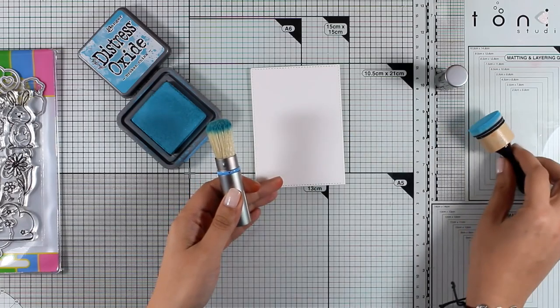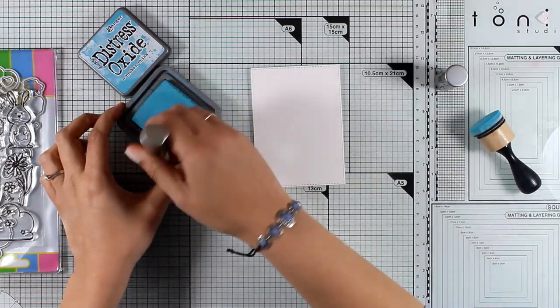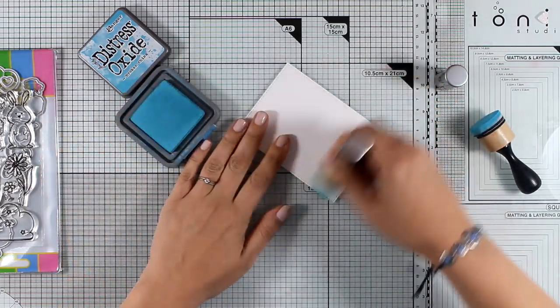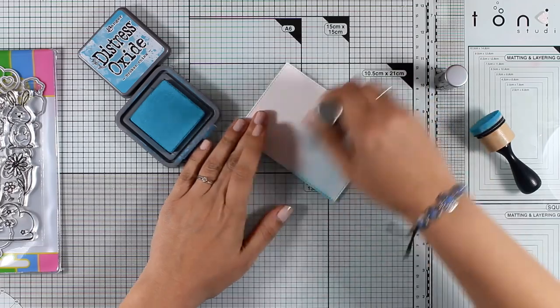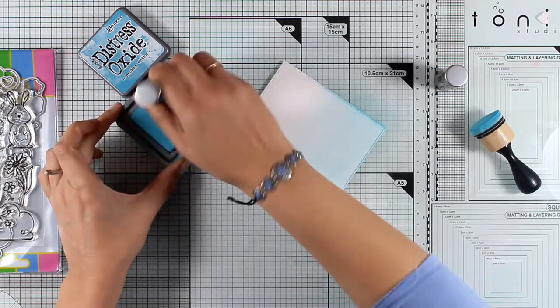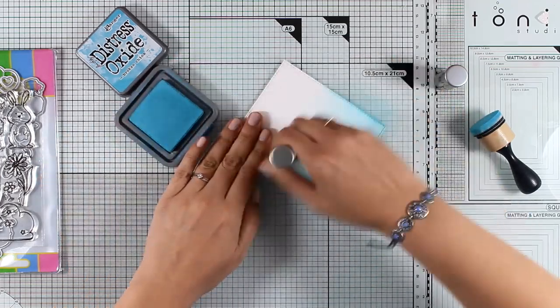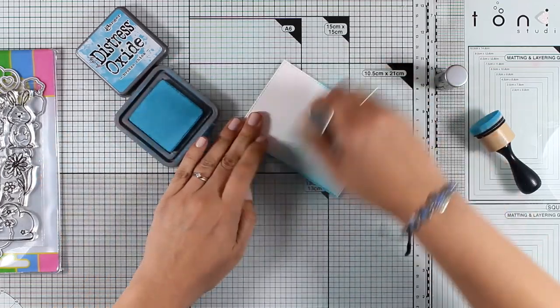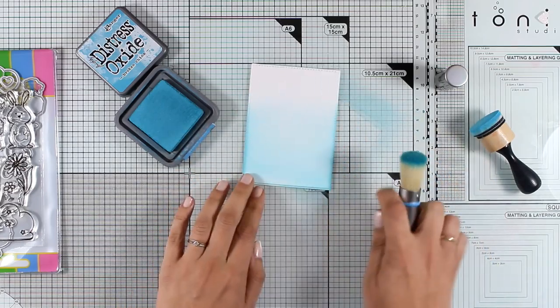I'm going to start by doing some inking. For that I will use this Distress Blending Brush by Tim Holtz, but of course you can use your good old mini blending tool. I'm applying Distress Oxide ink and that's Broken China. I love the brush just because it gives you a very subtle look.